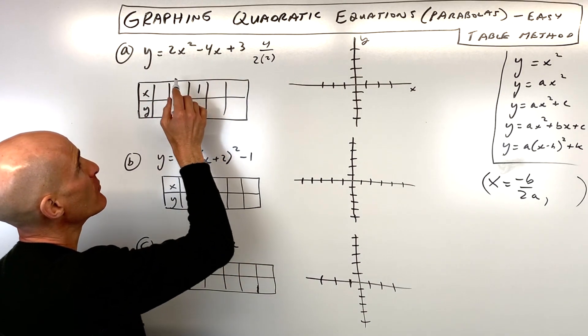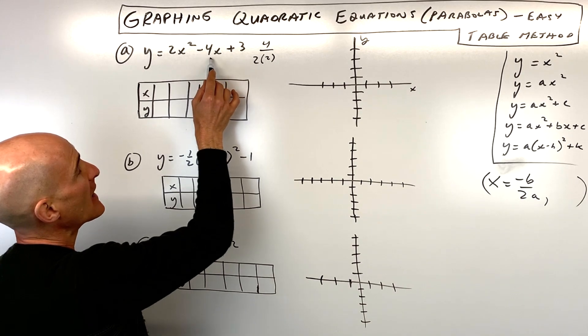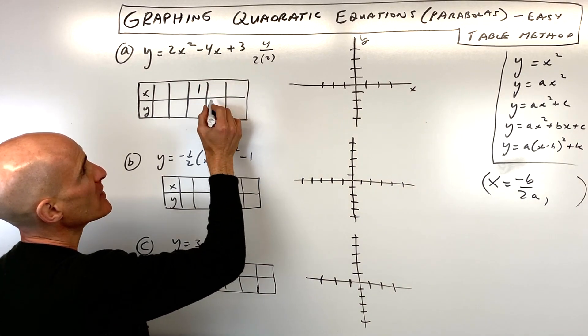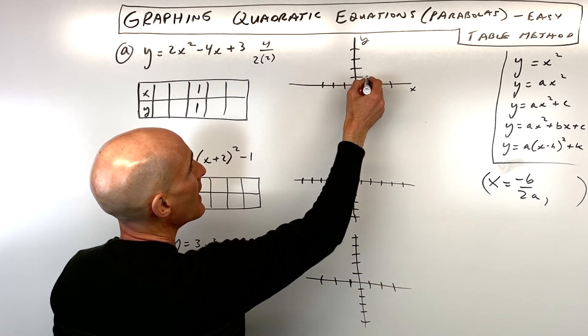If I put 1 back in, I get 1 squared is 1, times 2 is 2, minus 4 is negative 2, plus 3 is 1. So our vertex is going to be at (1, 1), right there.